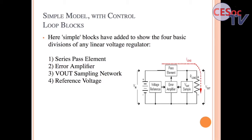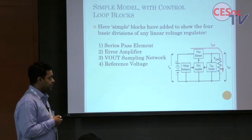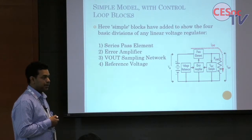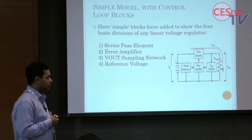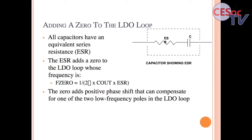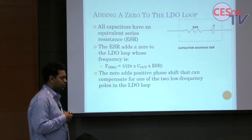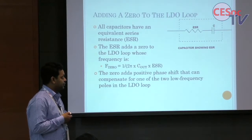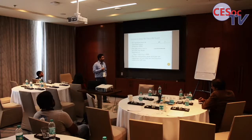These are the different elements involved in a load dropout regulator: a pass element, a voltage sampler, an error amplifier for controlling the loop, and a voltage reference for selecting the output voltage. The problem with the existing conventional LDO is that it requires a very large capacitor, and ESR is also required for control purposes, which I will explain in a later slide.